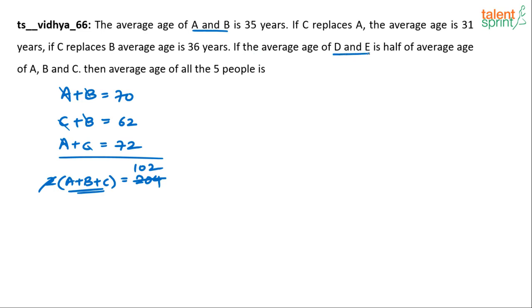Next he says the average of D and E is half of the average age of A, B, C. The average age of D and E, what is the average age of D and E? D plus E by 2 is half of the average age of A, B, C. The average age of A, B, C is A plus B plus C by 3. Are you getting it? Average age of D and E, D plus E by 2 is half of the average age of A, B, C, A plus B plus C by 3. Now solve for this. What happens? This two and two gets cancelled. I can conclude that D plus E, D and E together is A plus B plus C by 3. So which is 102. We know A plus B plus C is 102, 102 by 3. How much is this? 34. So D and E is 34.